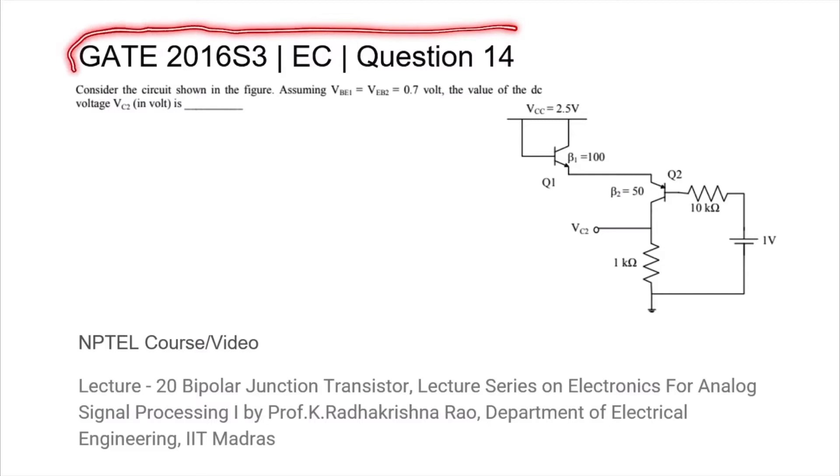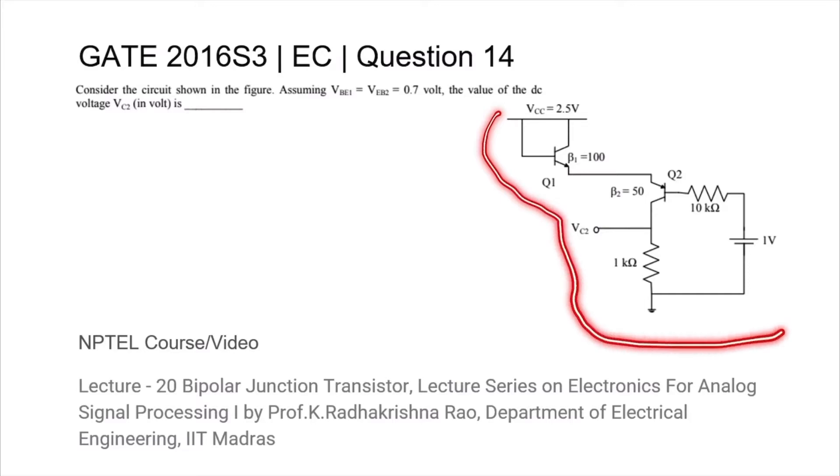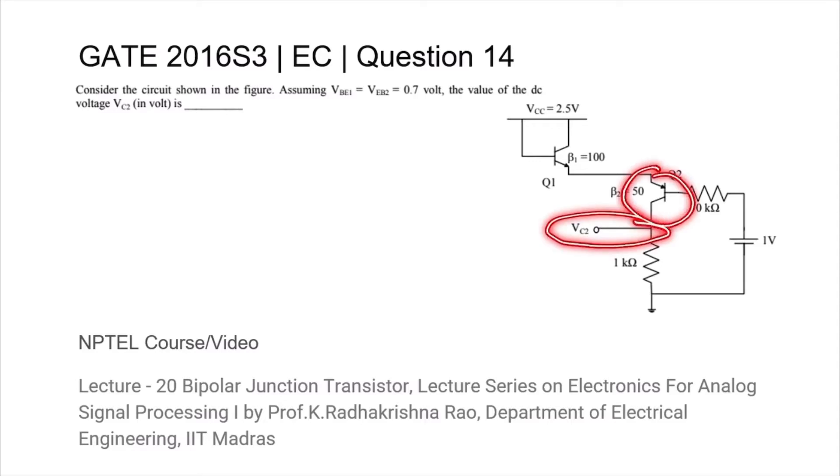This is question 14 from the GATE 2016 session 3 EC paper, where we are given this BJT circuit and are asked to find out what the voltage on the collector junction of this PNP transistor is.